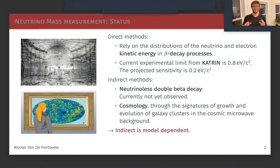There are also a set of indirect methods. One of them is the so-called neutrinoless double beta decay which has never been observed yet. And then there is also cosmology, where we try through the signatures of growth and evolution of galaxy clusters in the cosmic microwave background to put a limit to the mass that these neutrinos can have.